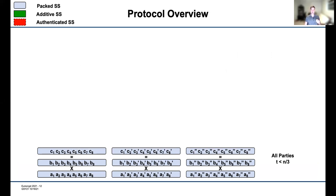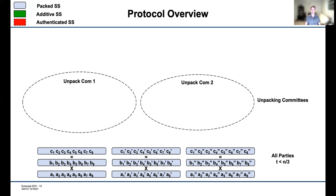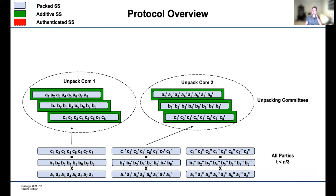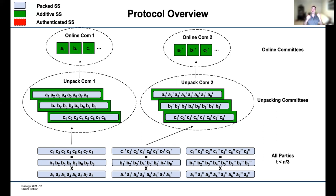I want to start with a high-level overview of the MPC protocol. We follow a now-standard approach of using Beaver multiplication triples: an offline phase generates multiplication triples, and an online phase uses those triples to evaluate an arbitrary circuit C. All parties prepare these triples using packed secret sharing to be communication-efficient and sublinear. Each party chooses values A_i and B_i, packs them into packed secret sharings, and produces packed secret-shared triples. Those packed triples are then unpacked and passed to online committees, which authenticate them and run an online MPC protocol.